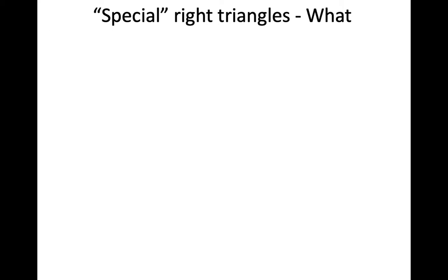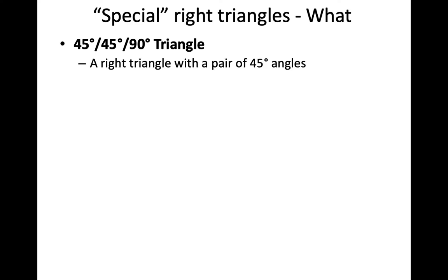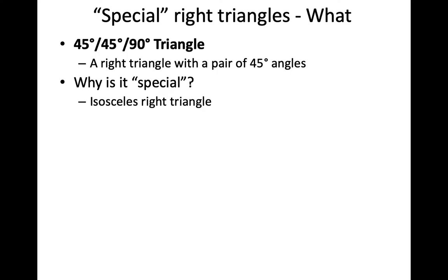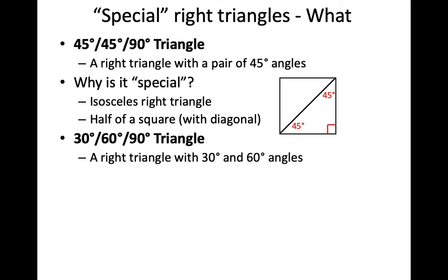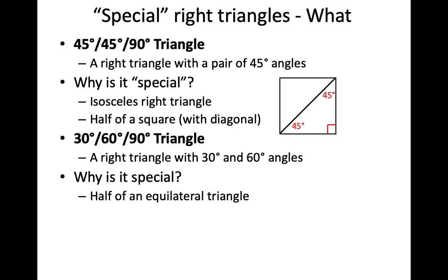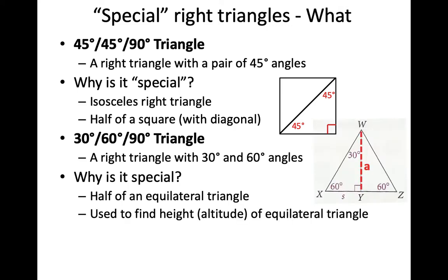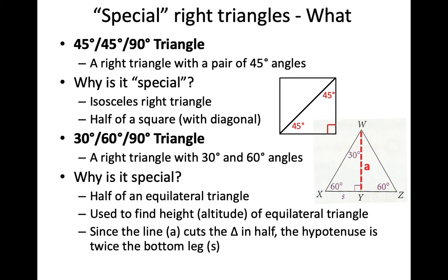What makes these two triangles so special? For a 45-45-90 triangle, it's a right triangle with a pair of 45-degree angles. It's special because it's the only isosceles right triangle, and if you take a square and cut it in half with a diagonal, it makes a 45-45-90 triangle. For the 30-60-90 triangle, it's a right triangle with 30 and 60-degree angles, and it's special because it's half of an equilateral triangle. If you draw the altitude of an equilateral triangle, it creates two 30-60-90 triangles, and that cuts the base in half, making the short leg half as big as the hypotenuse.